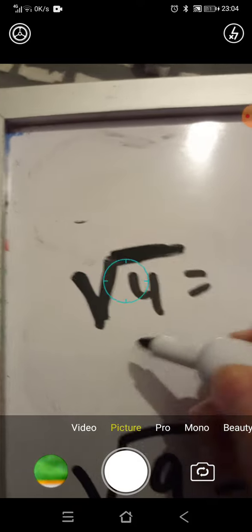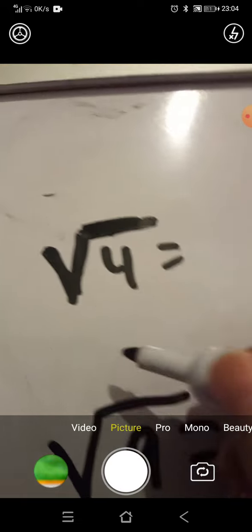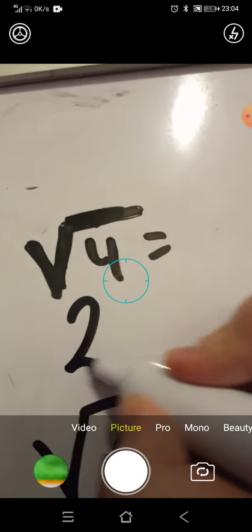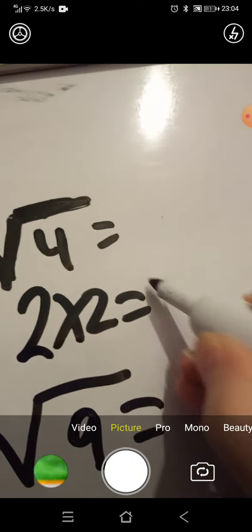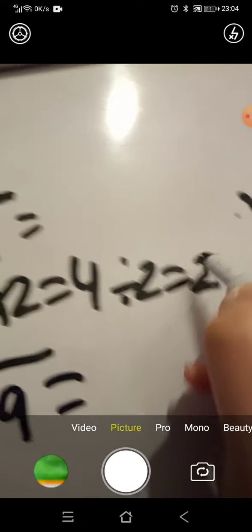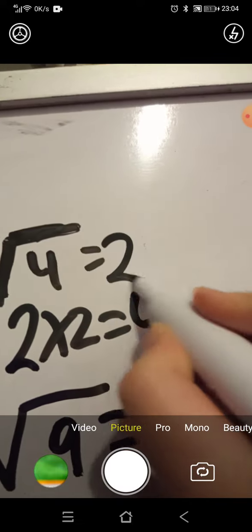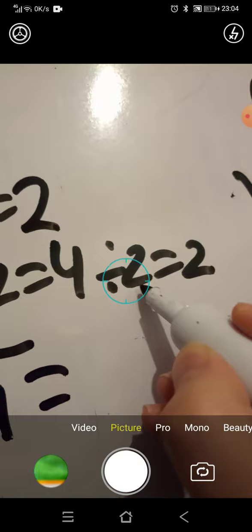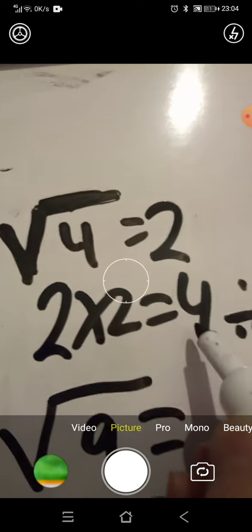So you basically divide by whatever times table gets you the number four. If that's confusing, I'll show you how. Two times two equals four, four divided by two equals two. So the answer is two. You divide it by a times table that would already get you the answer four, if you know what I mean.